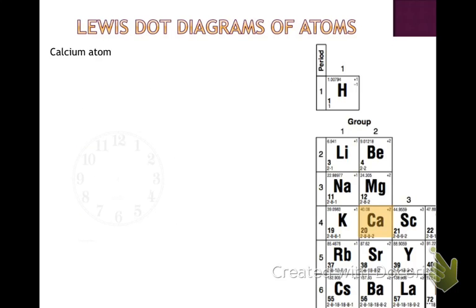Coming back to calcium — we still have the clock face. Calcium's symbol is Ca, and it has 2 valence electrons. We know it has 2 valence electrons because it's in group 2, and also based upon the electron configuration in the lower left-hand corner. So we drop off the 2 electrons for calcium just like we would for the valence shell.